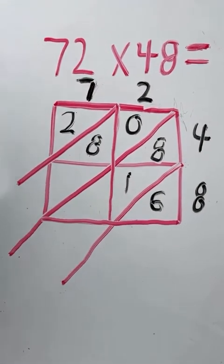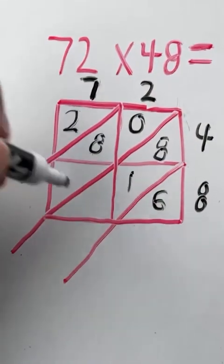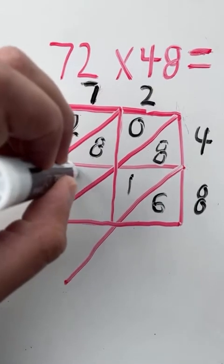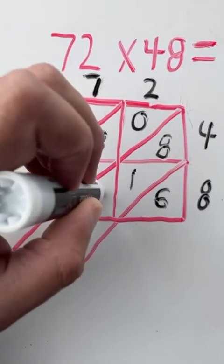Next, we're going to multiply seven times eight. The answer to seven times eight is going to go in this square. Five in the top triangle, six in the bottom triangle. Seven times eight is 56.